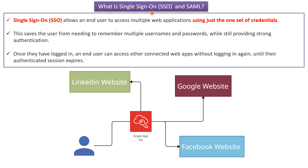This video tutorial explains what is single sign-on and SAML. Single sign-on allows end users to access multiple web applications using just one set of credentials. Because of single sign-on, the user does not need to remember multiple usernames and passwords for different applications. Once the user is logged in, they can access other connected web applications without logging in again until their authenticated session expires.